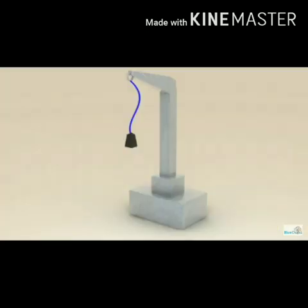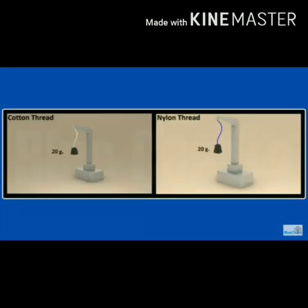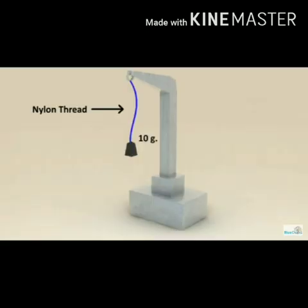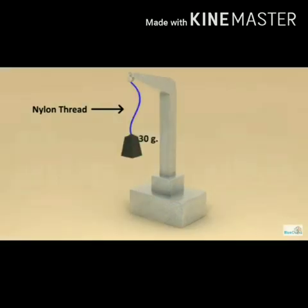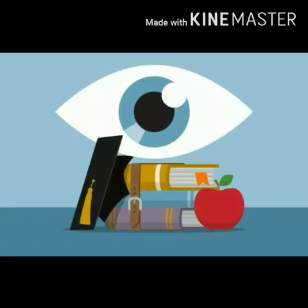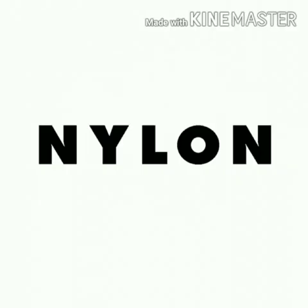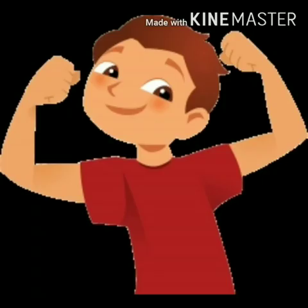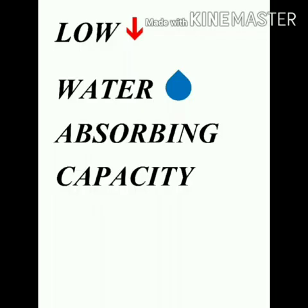Go on adding more and more weights till the cotton thread breaks. Repeat this activity using a nylon thread. We see that the cotton thread breaks more easily compared to the nylon thread. The nylon thread goes on stretching when weights are placed in the pan. It requires a lot of weight to break the nylon thread. This activity proves that nylon, or synthetic fiber, is stronger than cotton.